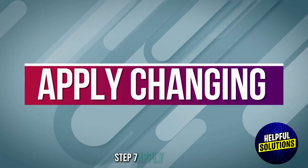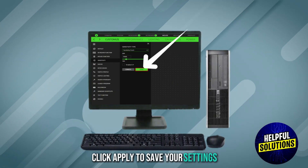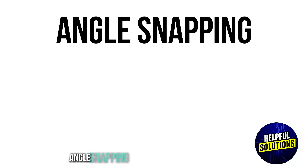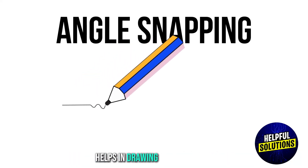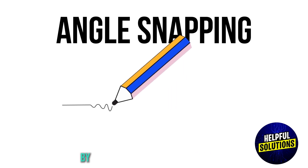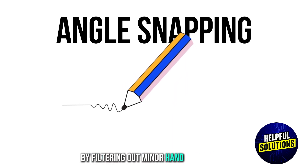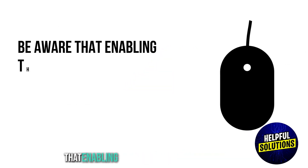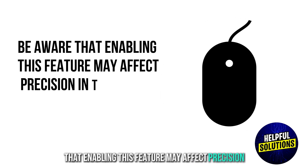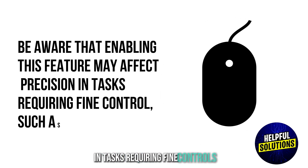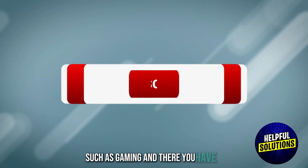Step 7: Apply Changes. Click Apply to save your settings. Angle Snapping, also known as Line Smoothing, helps in drawing straight lines by filtering out minor hand movements. Be aware that enabling this feature may affect precision in tasks requiring fine control, such as gaming. And there you have it.